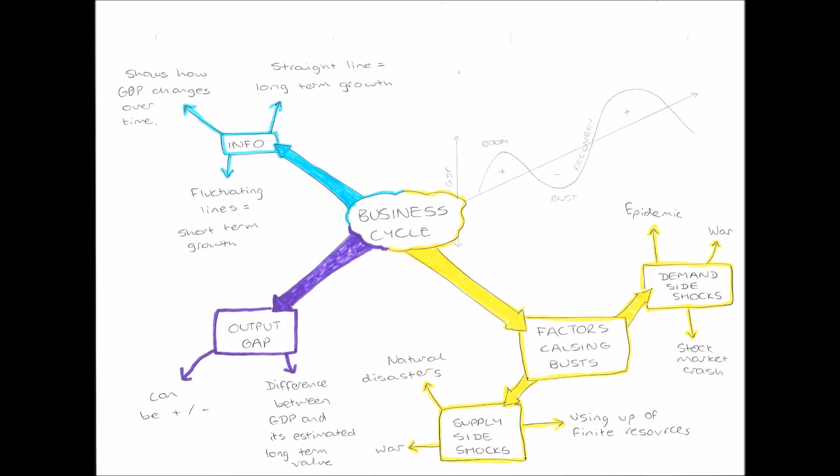And we have a copy of our business cycle drawn on the right hand side of our page here. And our straight increasing line represents long term growth, it represents long term GDP.